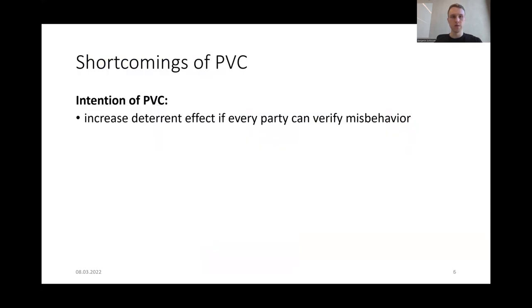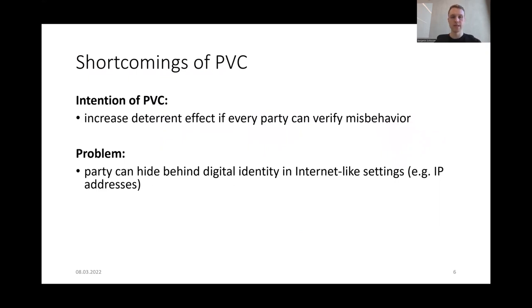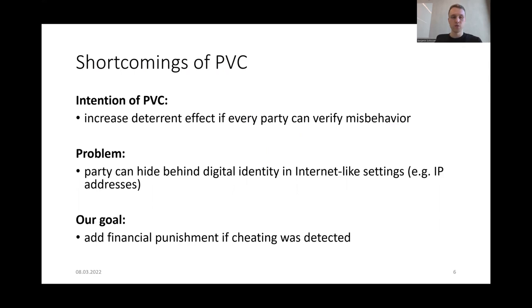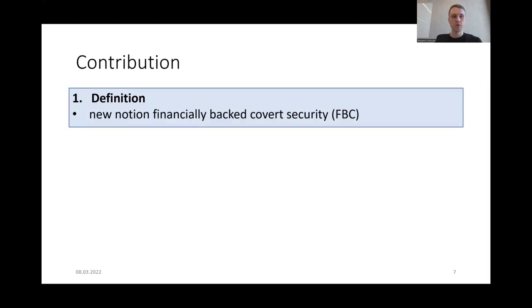While the intuition of PVC is that publicly verifiability should increase the deterrent effect, we observed a problem in settings like the internet where parties can hide behind digital identities that can easily be changed. Therefore, our goal is to connect detected cheating directly with financial punishment. Our contribution is to present the definition of our new notion called financial backed covert security, short FBC.